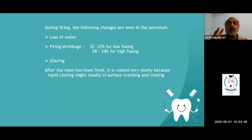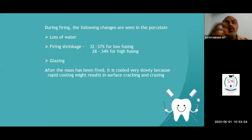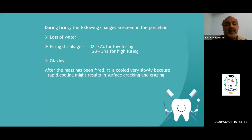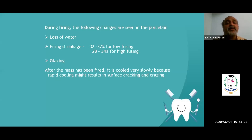Shrinkage occurs because when you heat the ceramic, the water content comes out. Once water comes out, the molecules become closely packed — inter-atomic bonding increases. Loss of water causes 32 to 37 percent shrinkage in low fusing ceramic, and 28 to 35 percent shrinkage in high fusing ceramic.